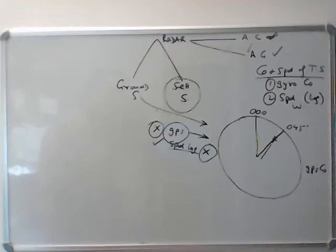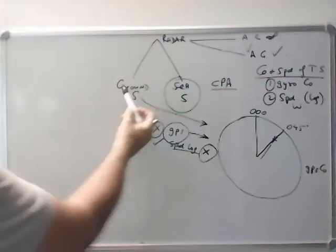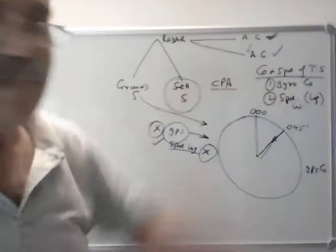If you just want to find out CPA, you can keep it to ground stabilized or sea stabilized — you will get the same CPA. But the course and speed will be different. Let us see how.